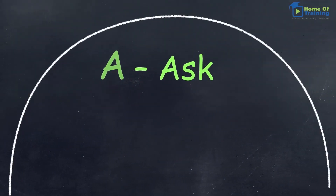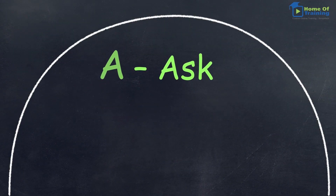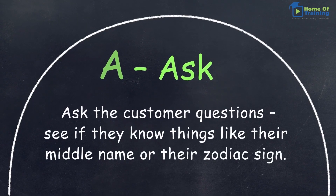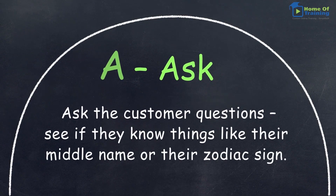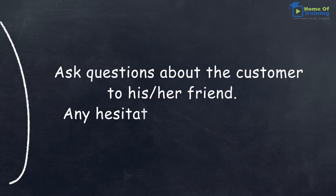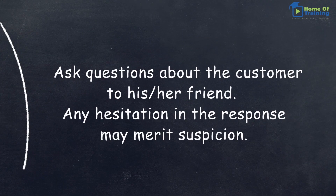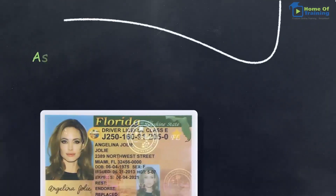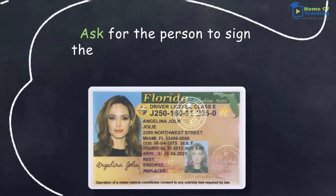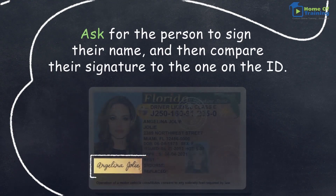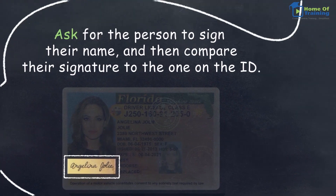A — Ask. Ask the customer questions. See if they know things like their middle name or their zodiac sign. Ask questions about the customer to his or her friend — any hesitation in the response may merit suspicion. Ask for the person to sign their name and then compare their signature to the one on the ID.